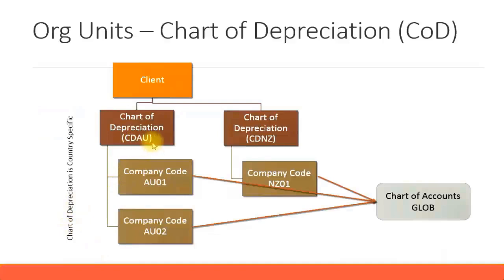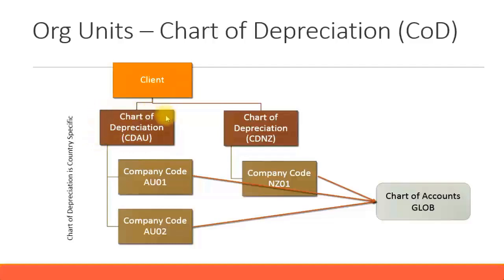The chart of depreciation is the highest node in the asset accounting module. The chart of depreciation is also country specific — for each country, SAP has already predefined a set of chart of depreciation, and you can copy an existing one and use it for your purposes. Just like we saw a chart of accounts which has a list of all the GL accounts, the chart of depreciation will have all the depreciation areas, all the asset classes, and so on.